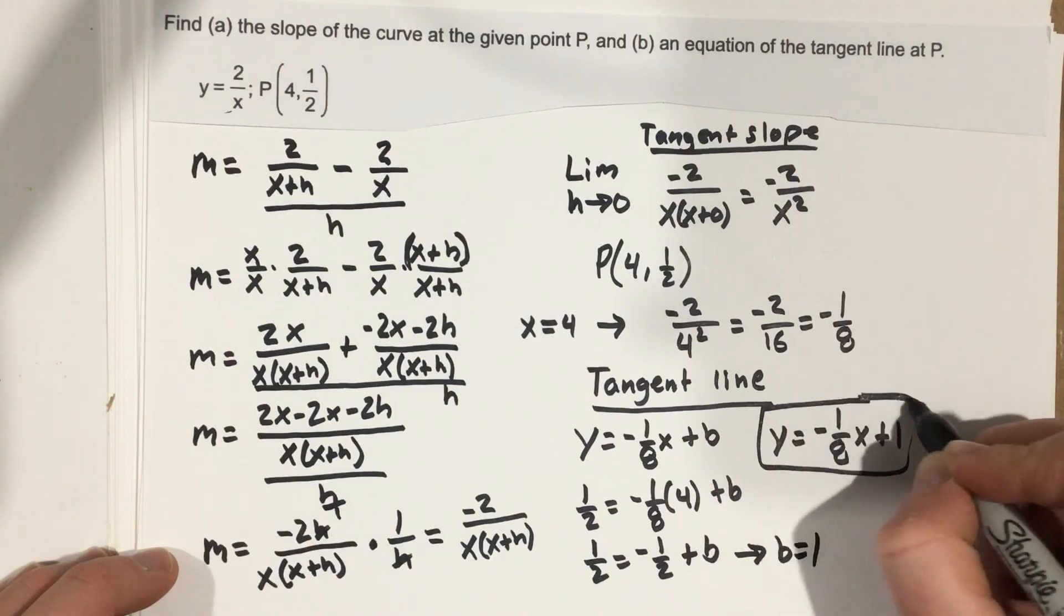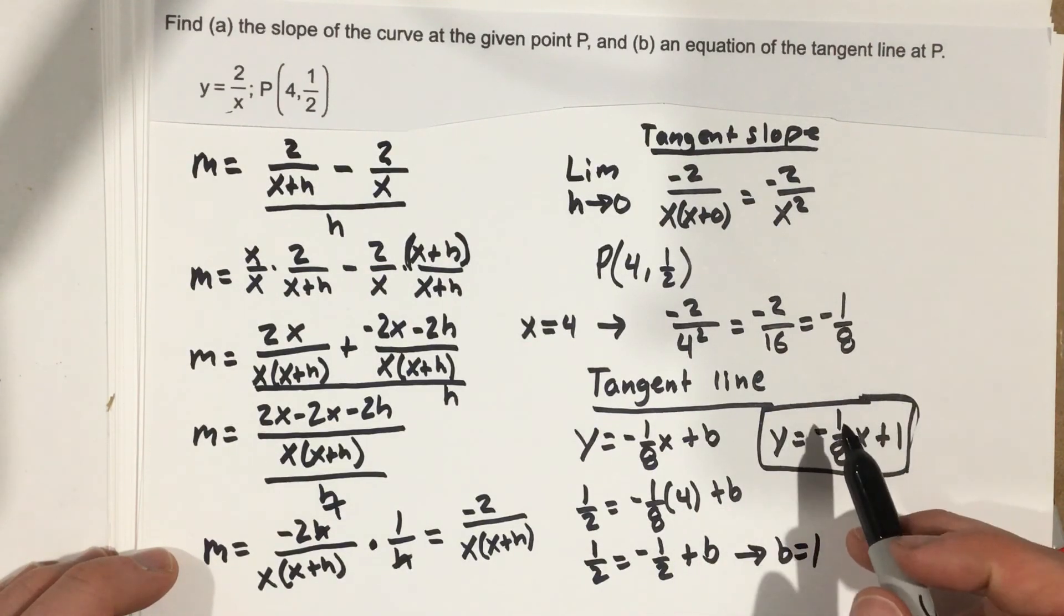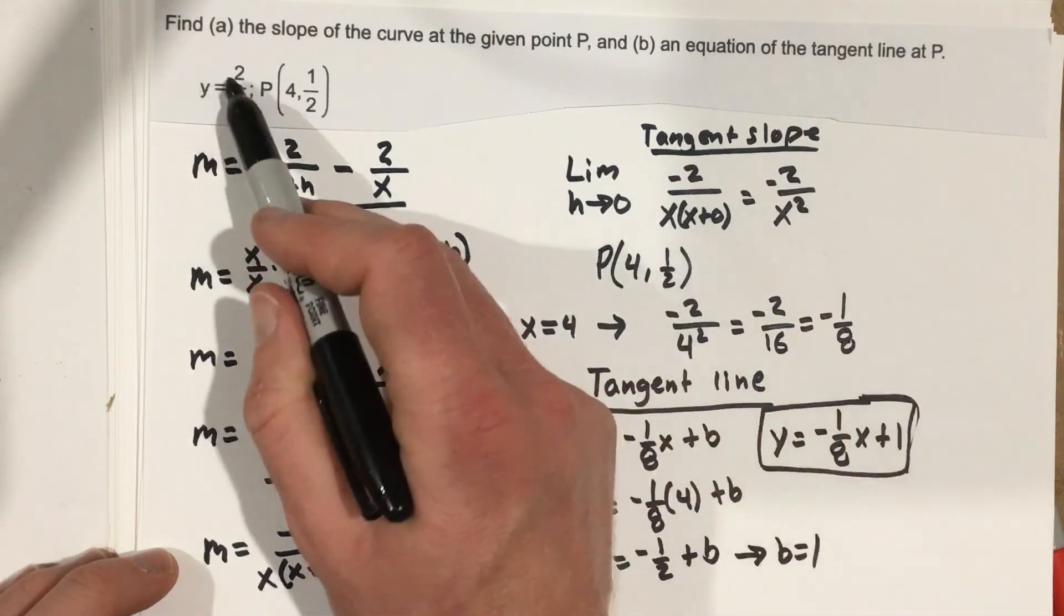This line is the tangent slope... this is the tangent line, sorry, that is at this point. So this is the tangent line at this point for this curve.